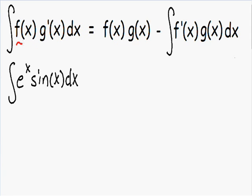I'm going to go back to my formula and the first thing I'm going to do is pick my f of x. In my first video, I told you that you need to pick f of x so that f prime is simpler than f of x. This is not possible in this particular example. If we picked e to the x as f of x, then f prime is e to the x as well — that is the same, it's not simpler. And if we picked the sine of x as f of x, f prime would be the cosine of x, which is also not simpler. So in this particular example, it doesn't matter what you pick as your f of x. I'm going to pick sine of x as the f of x.